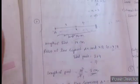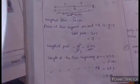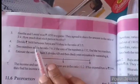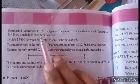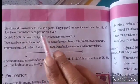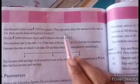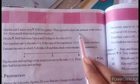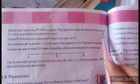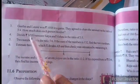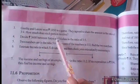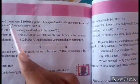Next problem: Gita and Lakshmi are friends. They win $1,050 in a game and agree to share the amount in the ratio of 3 to 4. How much does each person receive?